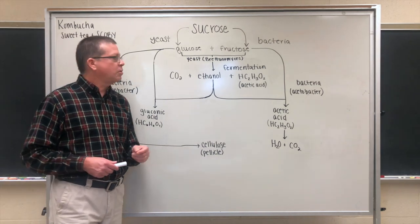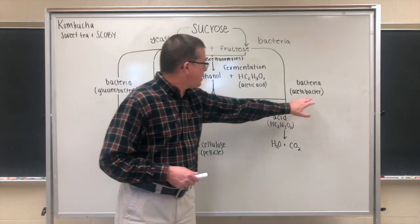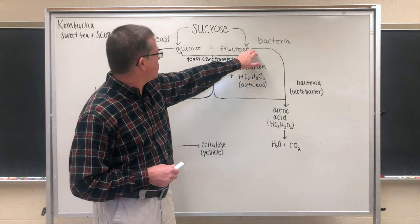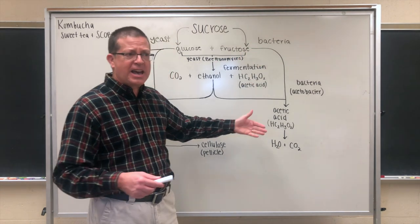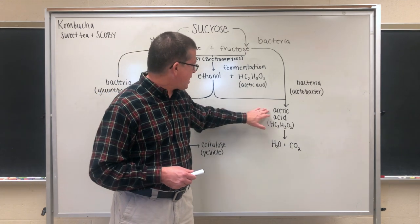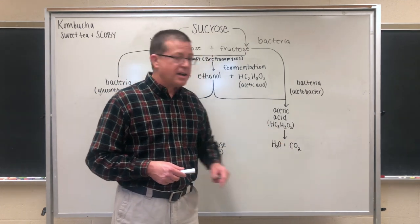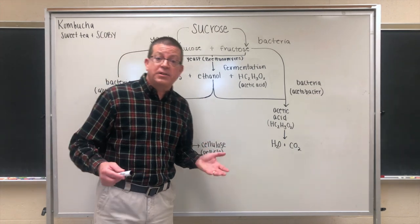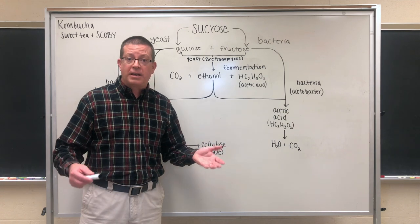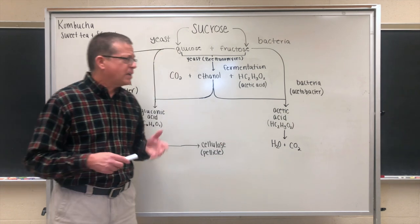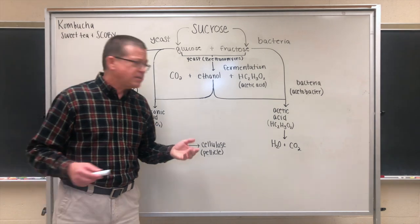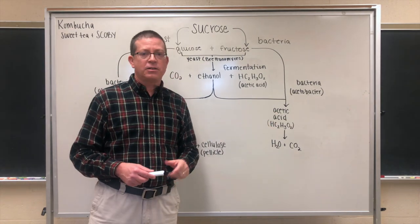On the other side of the board we see the other bacterial pathway, caused by acetobacter — another kind of acetic acid bacteria. This one is responsible for converting fructose to acetic acid. Acetic acid contributes more of the vinegary type taste that we sometimes encounter in kombucha, and over time acetic acid can be further hydrolyzed into water and carbon dioxide gas. Taken together, all of these processes contribute to the ultimate flavor profile of your kombucha prior to any flavoring or secondary fermentation.